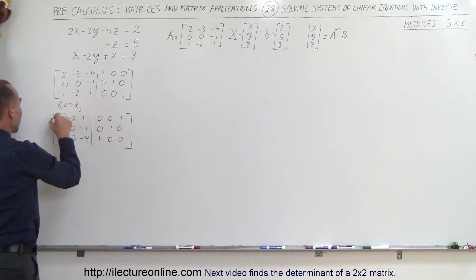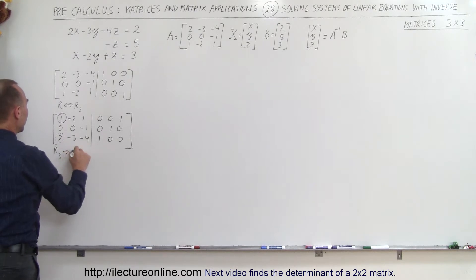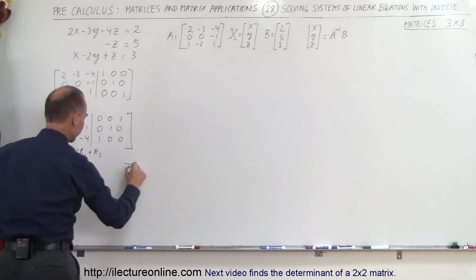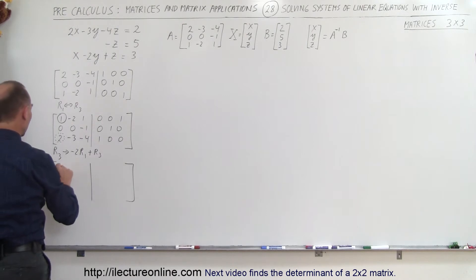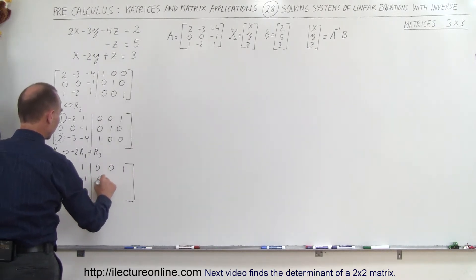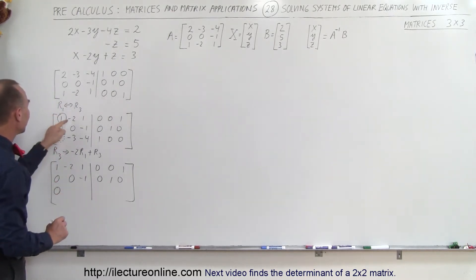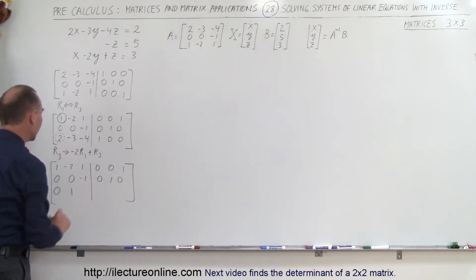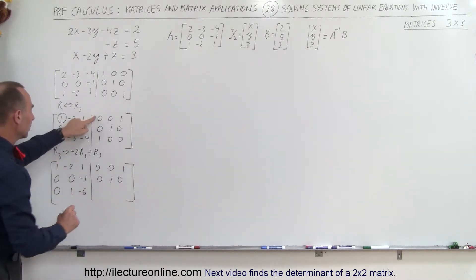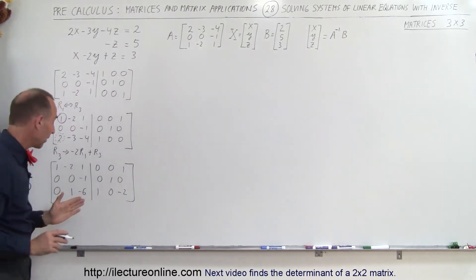Now we have the 1 in the corner. We're going to use that 1 to turn the 2 in row 3 into a 0 by replacing row 3 with negative 2 times row 1 added to row 3. Row 1 stays: 1, -2, 1, 0, 0, 1. Row 2 stays: 0, 0, -1, 0, 1, 0. For row 3: -2 times 1 plus 2 is 0; -2 times -2 plus -3 is 1; -2 times 1 plus -4 is -6. The identity portion: nothing changes except -2 times 1 gives -2.